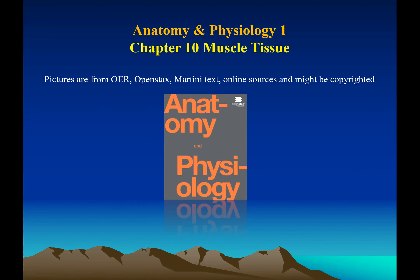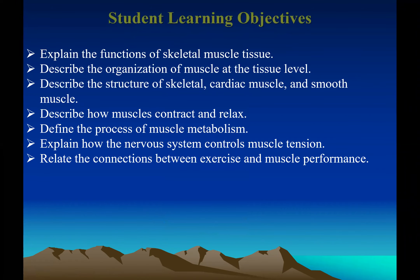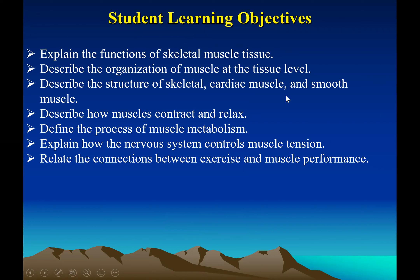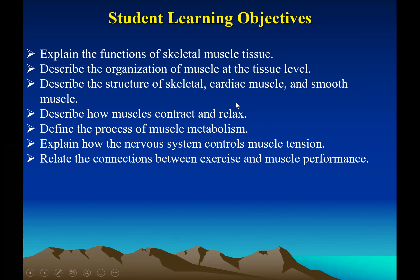Welcome to chapter 10 on muscle tissue. The learning objectives of this chapter are to understand the anatomy and physiology of muscle tissue. We will study the organization of muscles, the three main types — skeletal, cardiac, and smooth muscle — muscle contraction and relaxation, energy use and metabolism in a muscle, how the nervous system controls muscle contraction, and the connection between exercise and muscle performance.